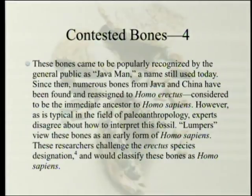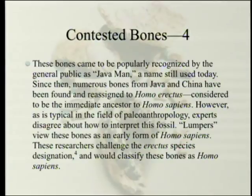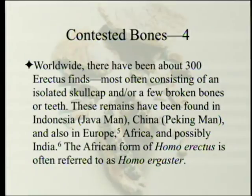These bones came to be popularly recognized as Java Man, a name still used today. Since then, numerous bones from Java and China have been found and reassigned to Homo erectus — Ernst Mayr said they're all Homo erectus. Considered to be the immediate ancestor of Homo sapiens, though experts disagree about how to interpret this fossil. Lumpers view these bones as an early form of Homo sapiens. Worldwide there have been about 300 erectus finds, most often consisting of an isolated skull cap or a few broken bones or teeth. These remains have been found in Indonesia, China, and also in Europe, Africa, and possibly India. The African form is often referred to as Homo ergaster.